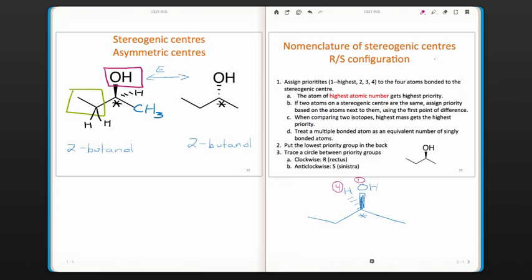And then we have to figure out what to do in the case of a tie. So in this case, to the right of the stereocenter is a carbon, and to the left is another carbon. So if two atoms on a stereogenic center are the same, we assign priority based on the atoms next to them, looking for the first point of difference.